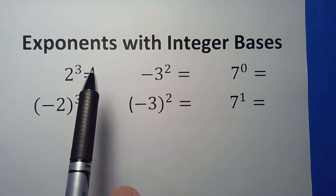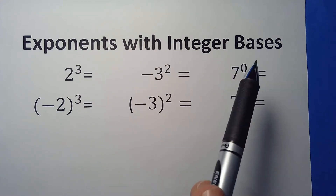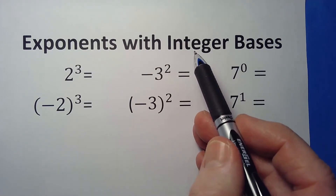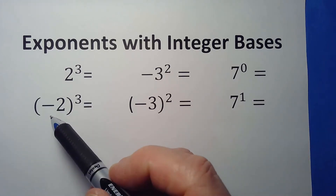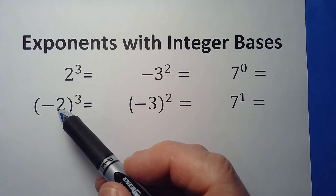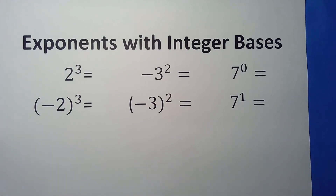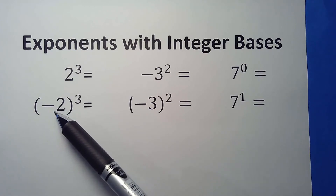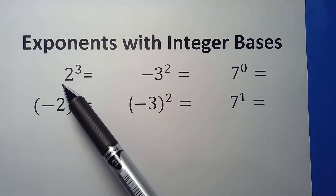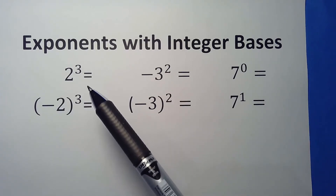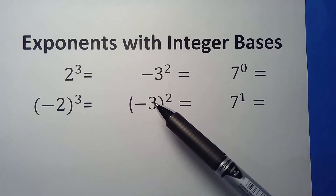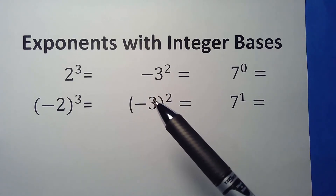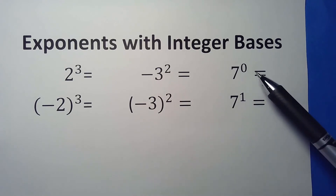Today we're going to talk about exponents with integer bases. An integer base means it could be positive or negative, but we're not going to include fractions or decimals — basically either a whole number or its negative opposite. We're going to look at how changing positive and negative, and the placement of parentheses, can be really critical.